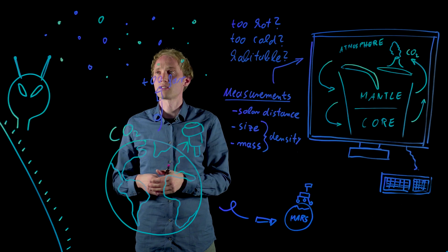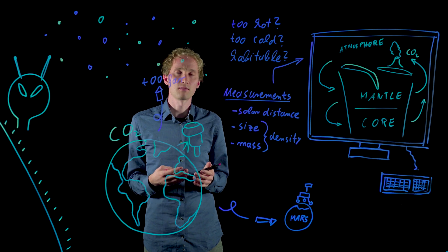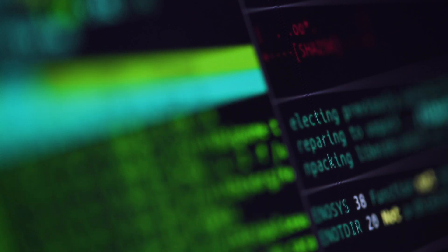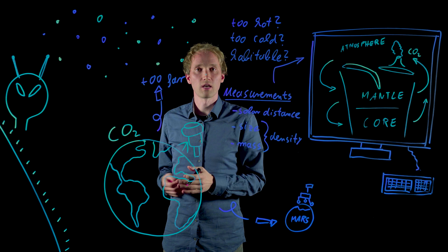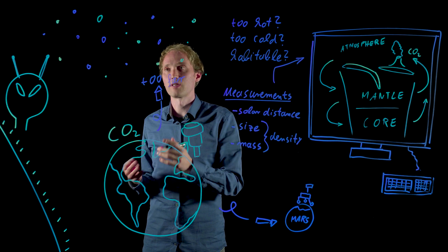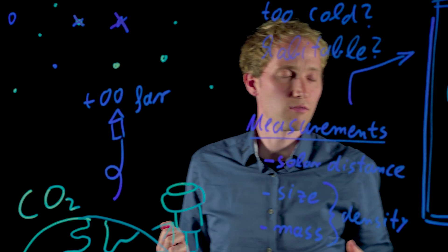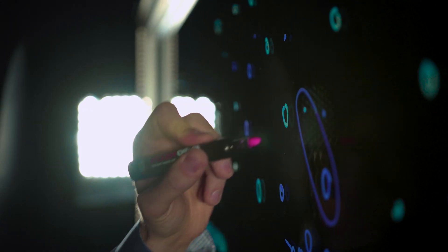And there are so many different planets out there to actually make these measurements. And by running these models, we can reduce the amount of planets we should be looking at when we search for extraterrestrial life. We can do this because we have a very good understanding of how processes in the Earth work.